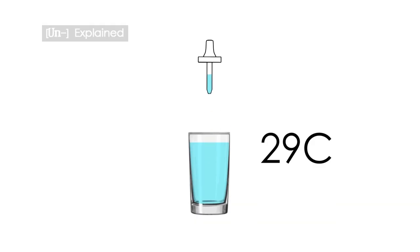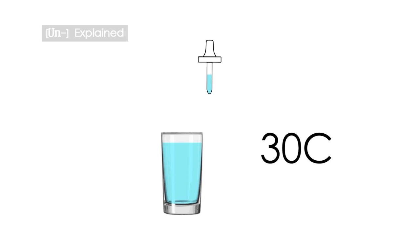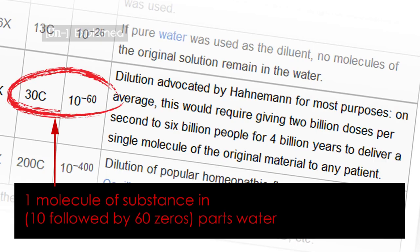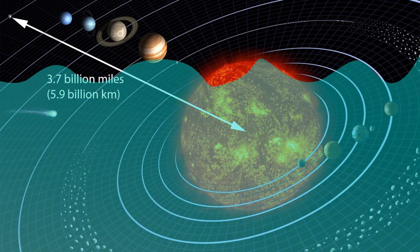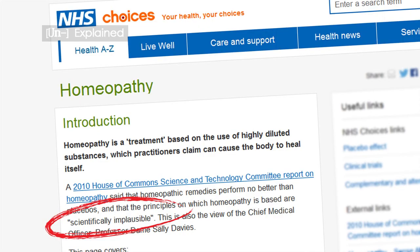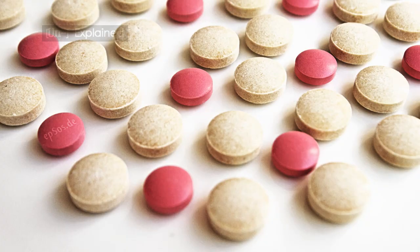Homeopaths regularly supply dilutions of 30C potencies and above. This equates to one part substance diluted in a body of water the size of the solar system. Study after study has proven that homeopathy is at best a placebo.